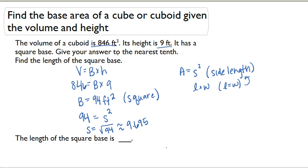Because the answer told me to round to the nearest tenth, I'm going to round that to be approximately 9.7 feet. So each side of my square base is approximately 9.7 feet.